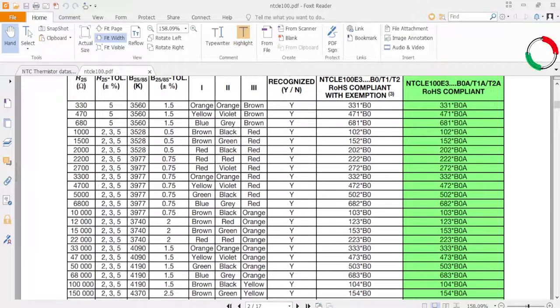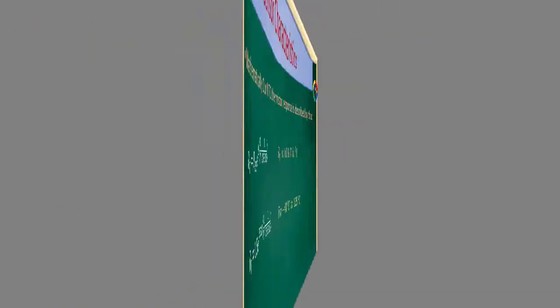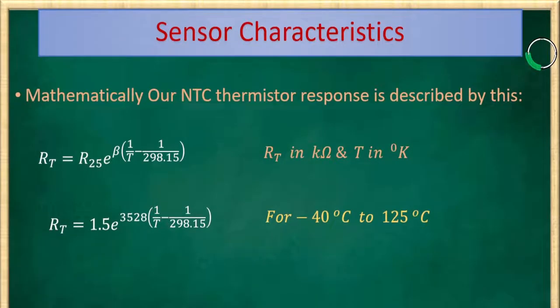After having this information, I am going to jump to my analytical perspectives. So, now we have the input-output relationship between resistance and temperature of this exponential function. And from the data sheet, we get R25 is equal to 1500 ohm or 1.5 kilo ohm and beta is 3528 Kelvin. And this function is expressed where RT is in kilo ohm and T is in degree Kelvin.